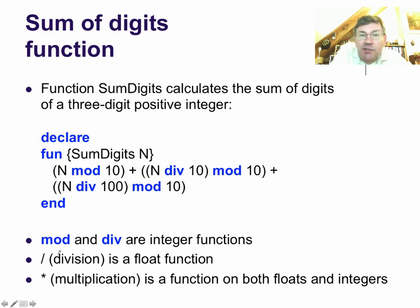The sum digits function that we defined here, which calculates the sum of digits of a three-digit positive integer in decimal notation, is defined as follows. And this uses the mod and div, modulo and division, which are integer exact operations.